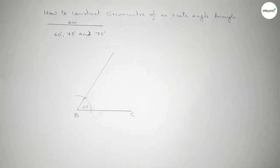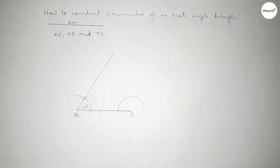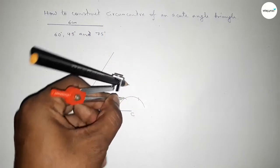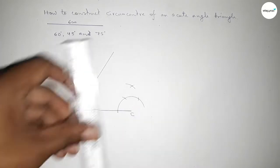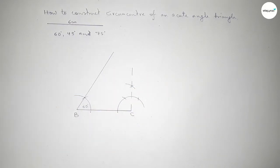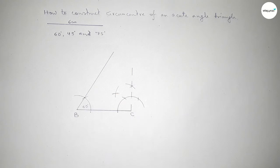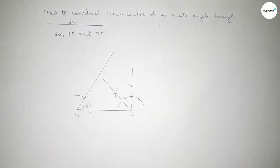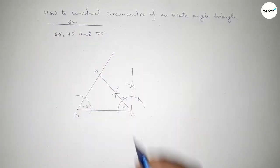Next we have to draw a 45 degree angle at point C. Taking any length and drawing an arc, then with the same length cutting here. First drawing a 90 degree angle, then bisecting this angle to get 45 degrees. Putting the compass and drawing an arc, both curves intersect at a point. Joining this line — checking, this is perfectly a 45 degree angle.